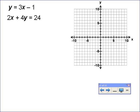This problem asks you to find the solution to this system of equations. To find the solution to a system of equations, we find out where the two lines intersect, because the graph of this equation is all the solutions to that equation, and the graph of this equation is all the solutions to that equation, so where they intersect, that would be a solution to both.